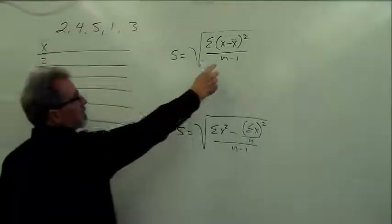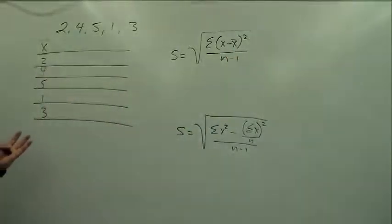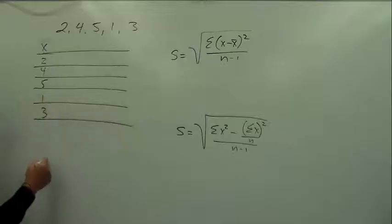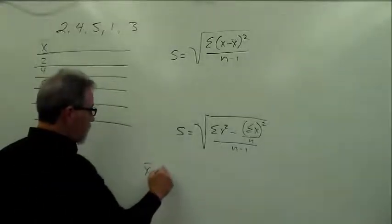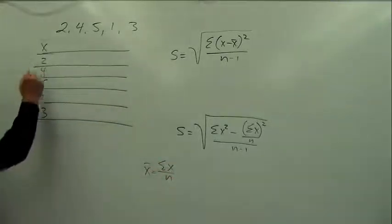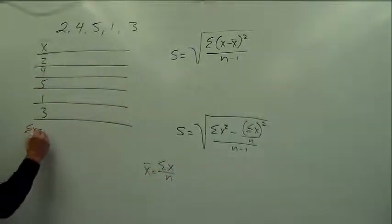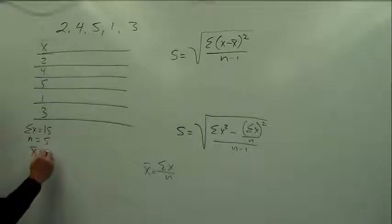Again, the numerator says we want the raw scores minus the mean. Well, we don't have the mean, so that's the first thing we've got to do is calculate the mean. Remember how to calculate the mean, right? x bar equals the sum of x over n. So we have to sum the x here. We sum these x, and it comes out to 15. And we know the sample size is 5. So 15 divided by 5, the mean is 3.